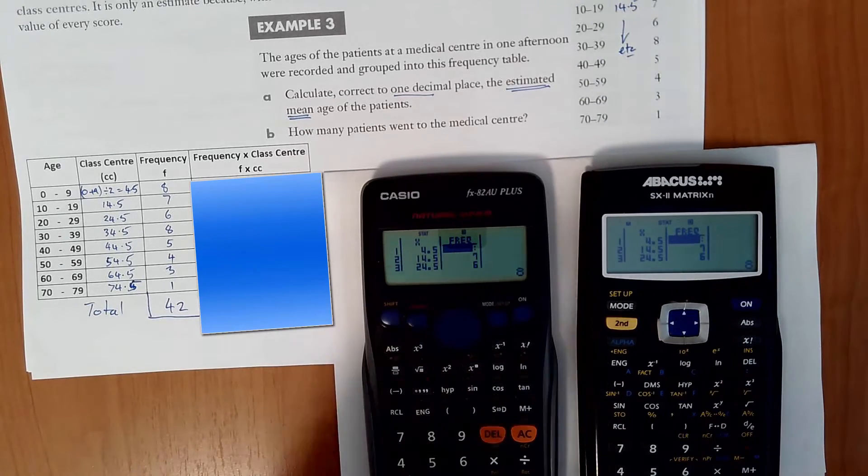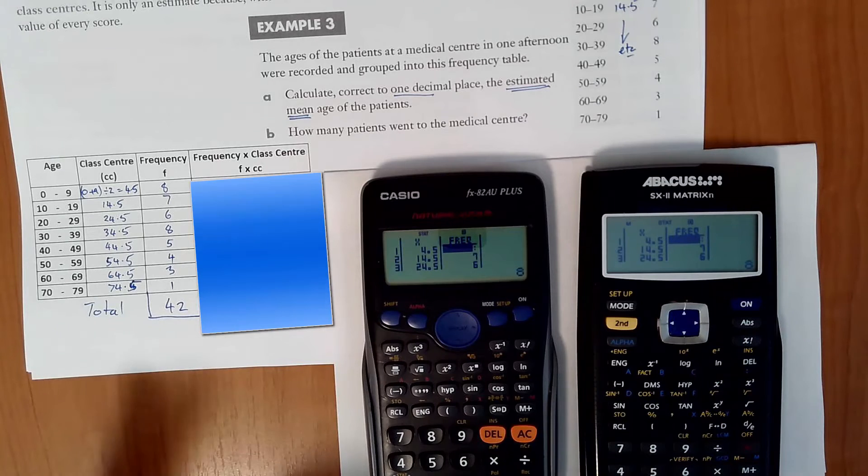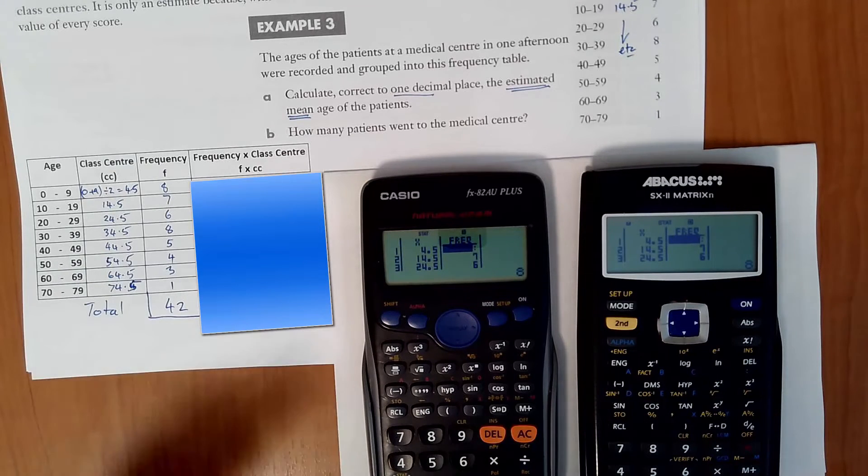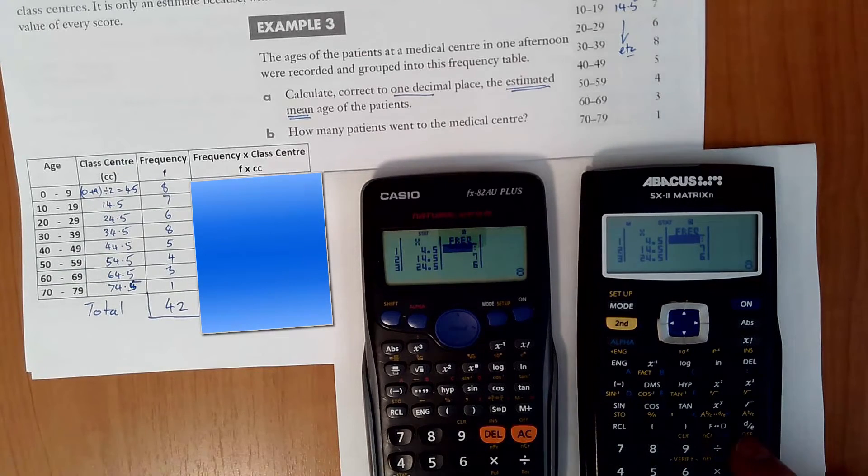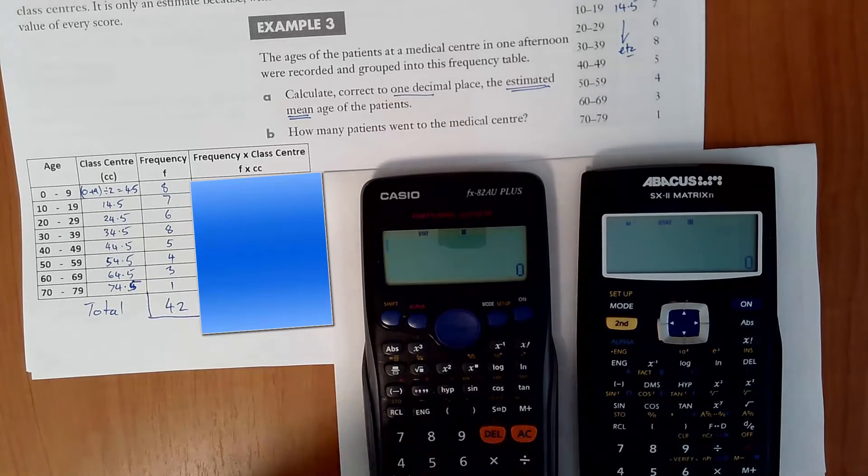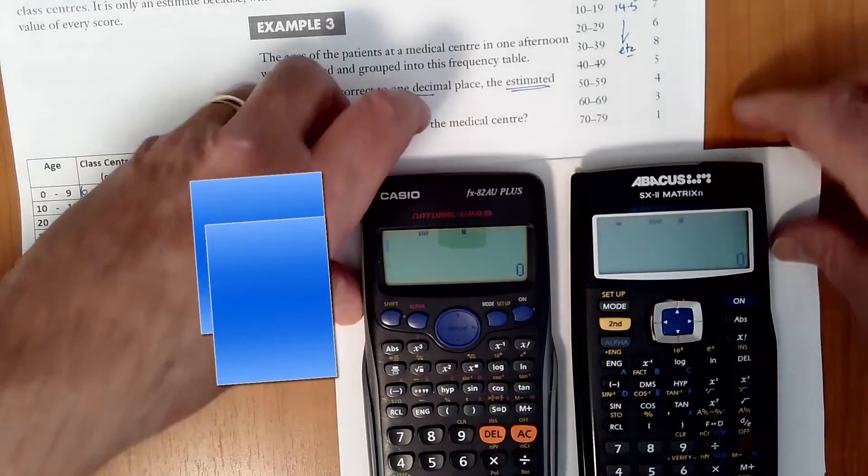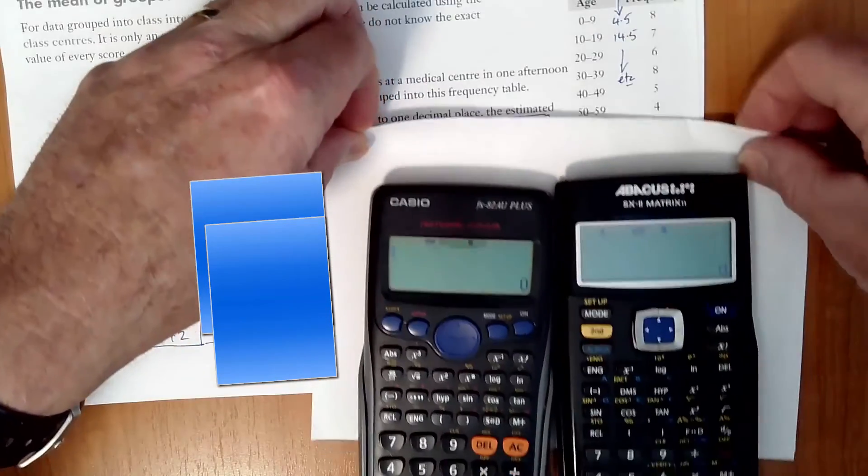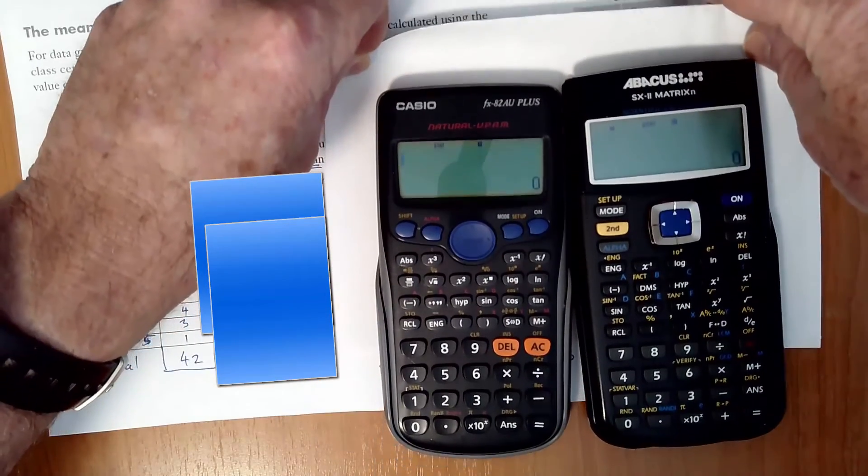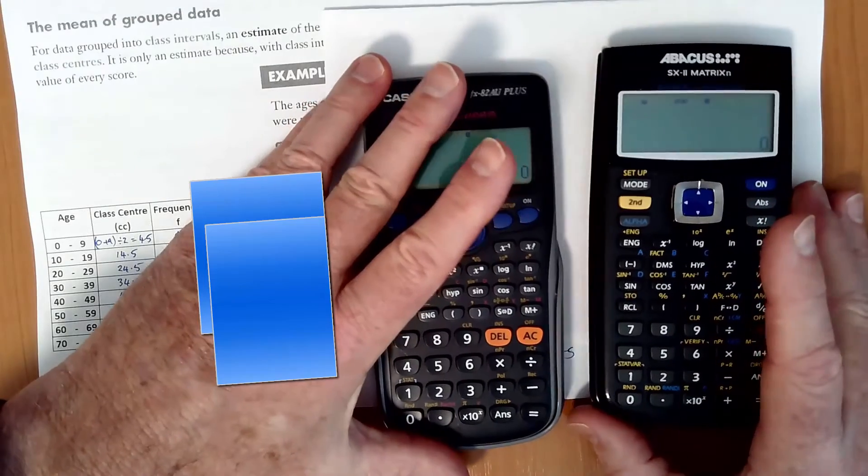Now, once your data's in there, we need to get out of that screen so we can do our statistical calculations. So we press the AC button on both calculators and it goes back and it looks like that. Then, what we're going to do is make sure that we can see the whole calculator here.